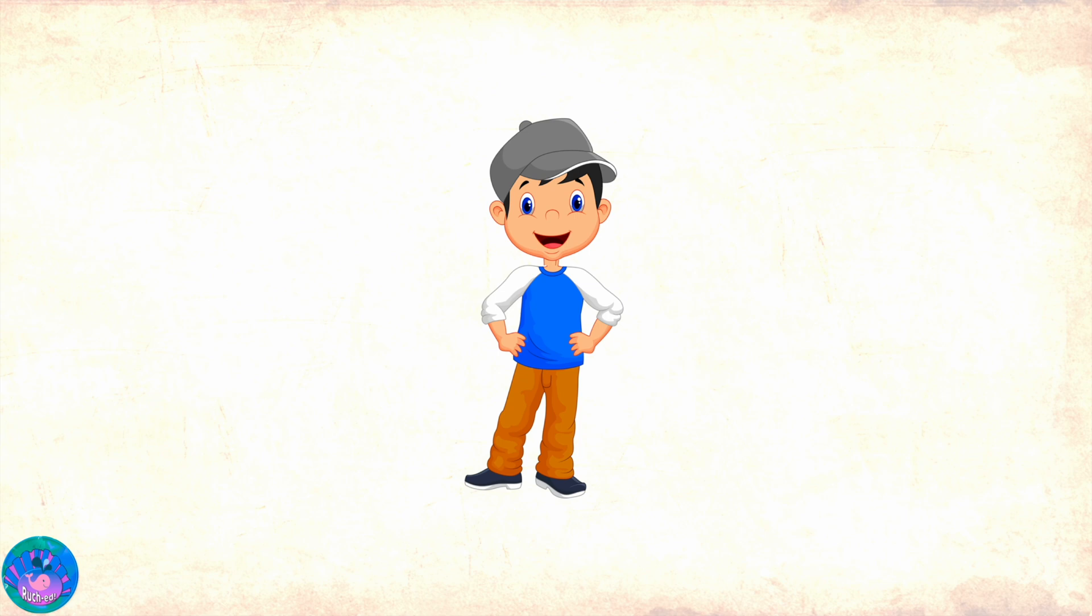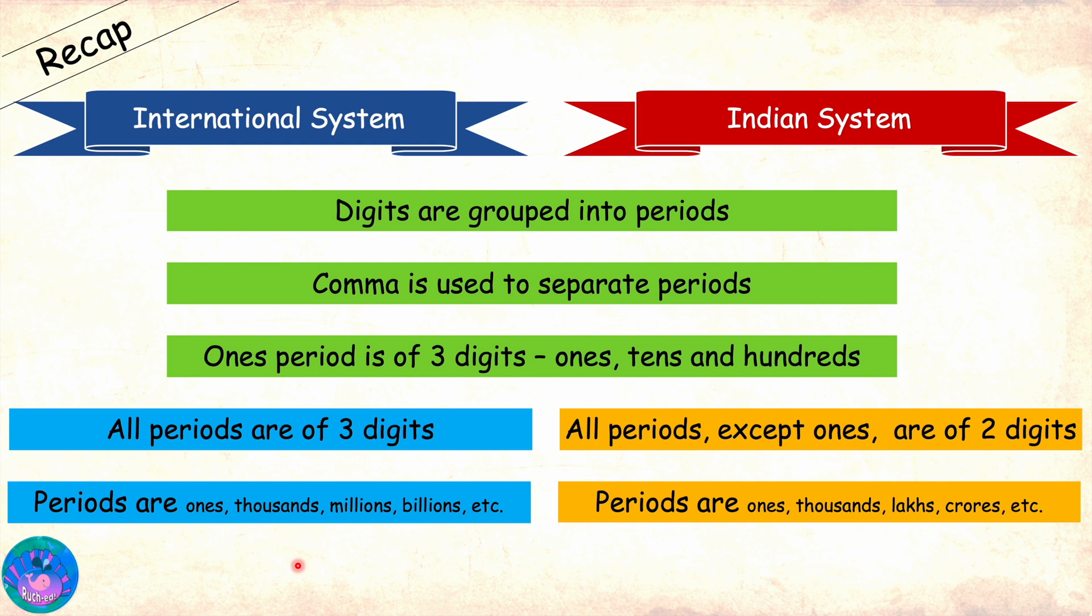Hello, Miss R. I am ready to learn about the Indian system of reading and writing numbers. Hello, Sam. That's wonderful. Now, do you remember what we learned in the last lesson? Yes. I learned that there are two main systems for reading and writing base 10 numbers, the international system and the Indian system.